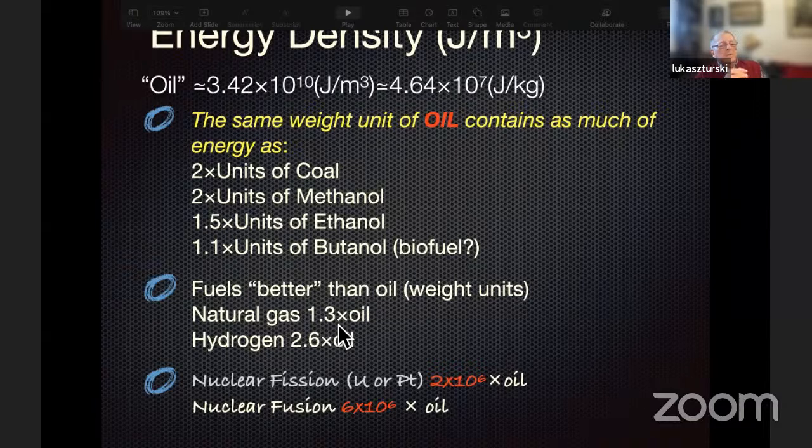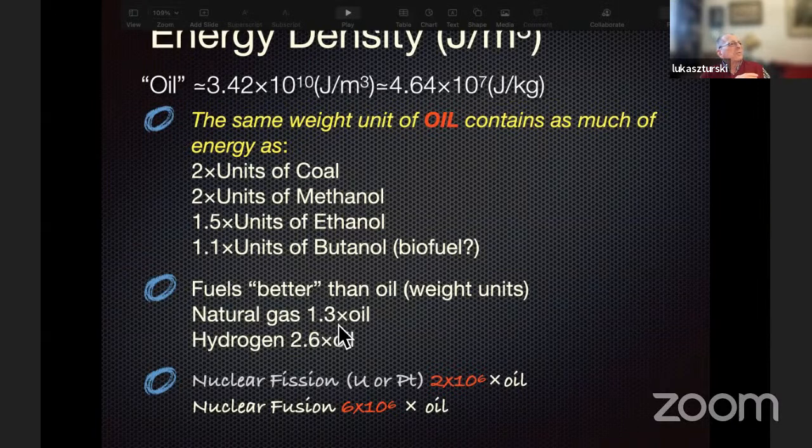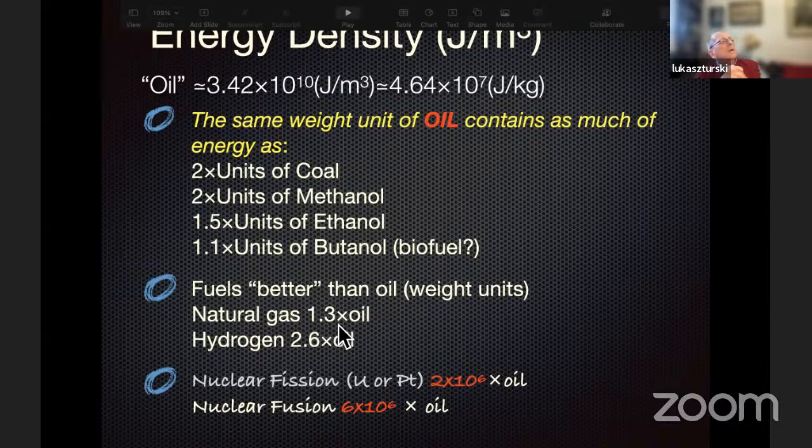Here we are not talking about a factor of two. We are talking about a factor of millions. This number tells you that there is no way, if the world wants to have cheap and generally available energy, then it has to use nuclear fission.